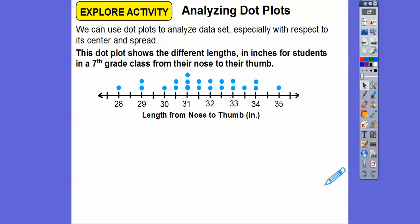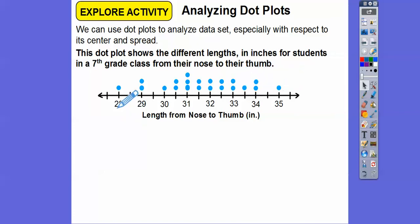Let's first count up all the dots so we can find the median. Counting them: 1 through 21. So there are 21 data points, meaning the middle number is the 11th number. Counting to the 11th: it falls between 31 and 32, so the median is 31.5.